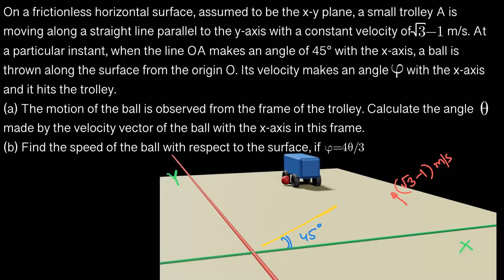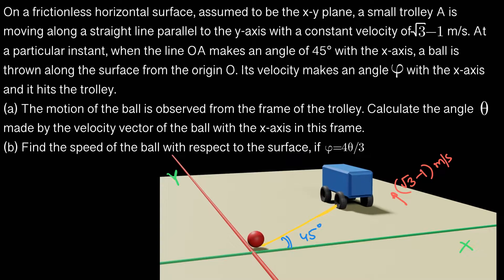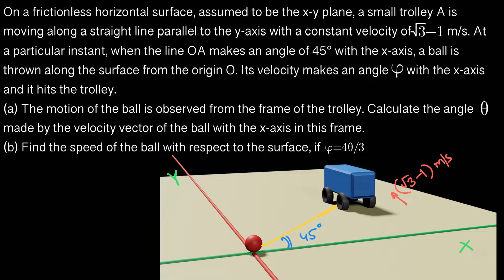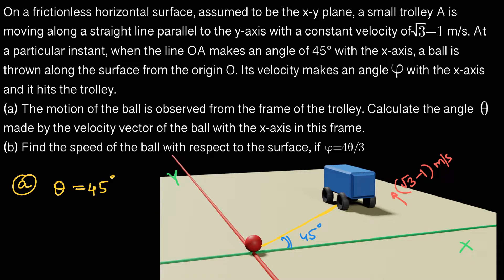In the first question, we are asked: if we are looking from the frame of the trolley — say you're a person sitting on the trolley — what is the angle made by the velocity vector of the ball with the x-axis? In the frame of the trolley, the initial position of the body is here and the final position is here, so its velocity vector should be in this direction. This vector makes an angle of 45 degrees with the x-axis, so we can directly write theta equals 45 degrees.